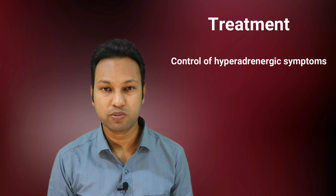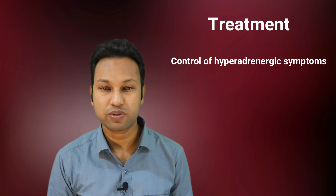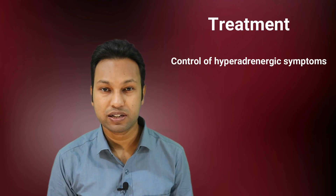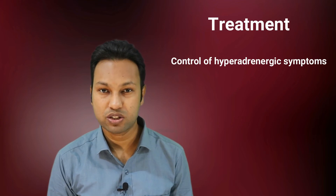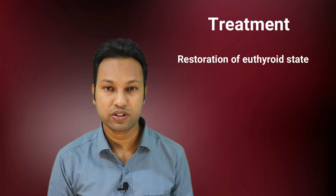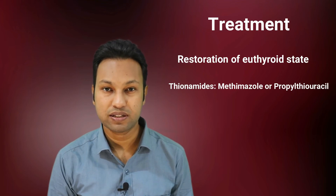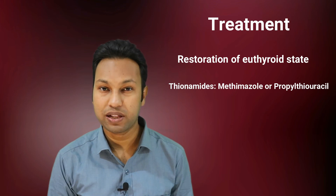How to treat Graves disease? The treatment can be divided into two parts: number one, control of the hyperadrenergic symptoms, and number two, restoration of euthyroid state. The hyperadrenergic symptoms can be controlled by beta blockers like propranolol or atenolol. Propranolol has to be given three to four times a day, but atenolol has the benefit of once-daily dosing. These beta blockers are discontinued once free T4 and T3 levels return to normal.